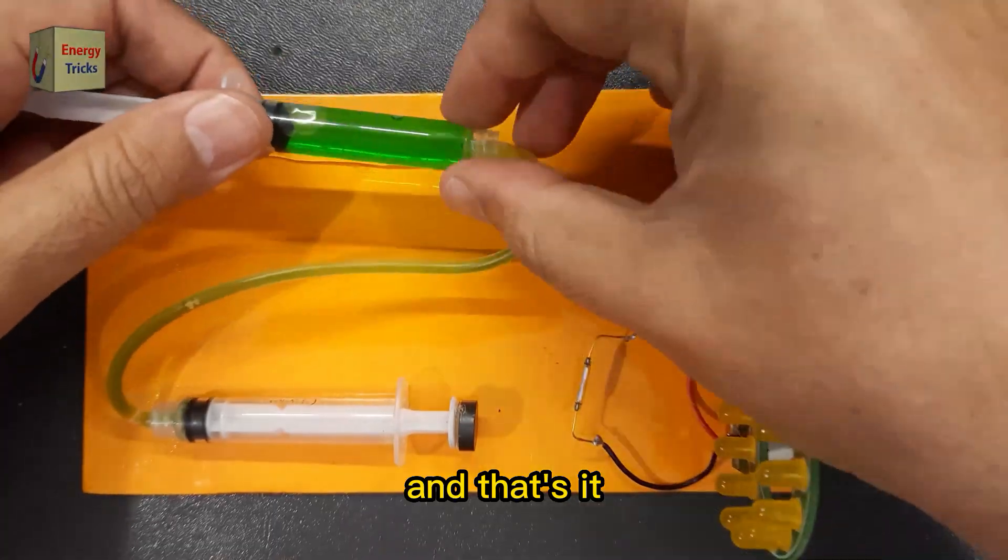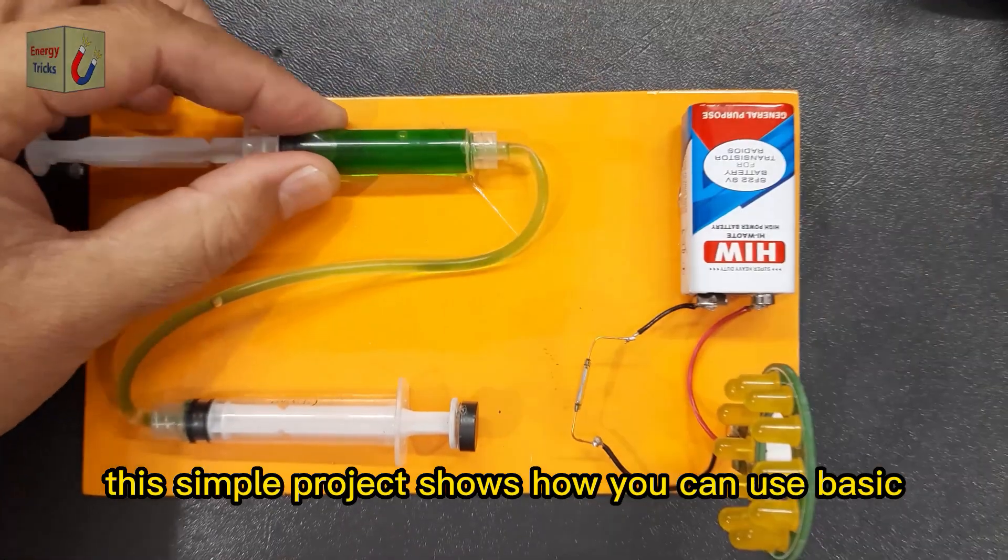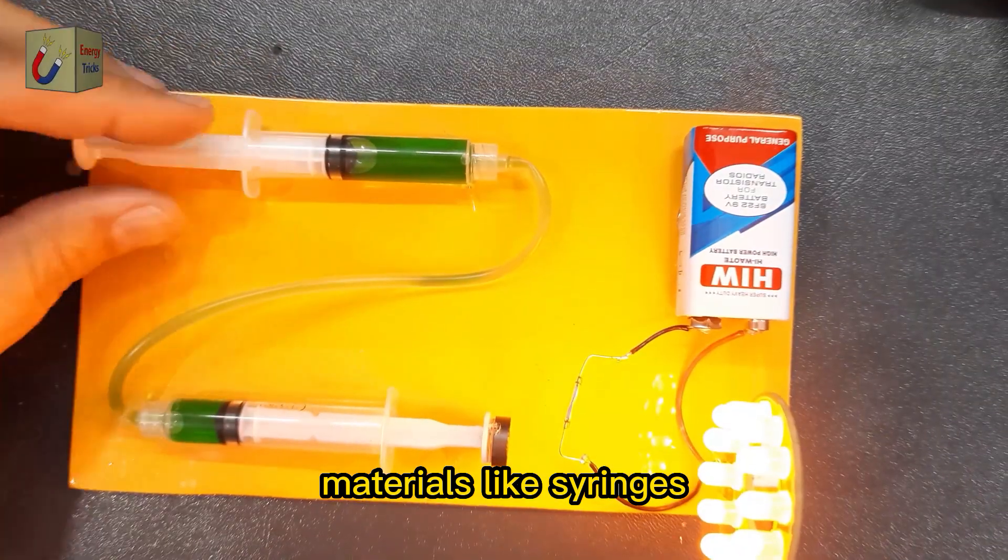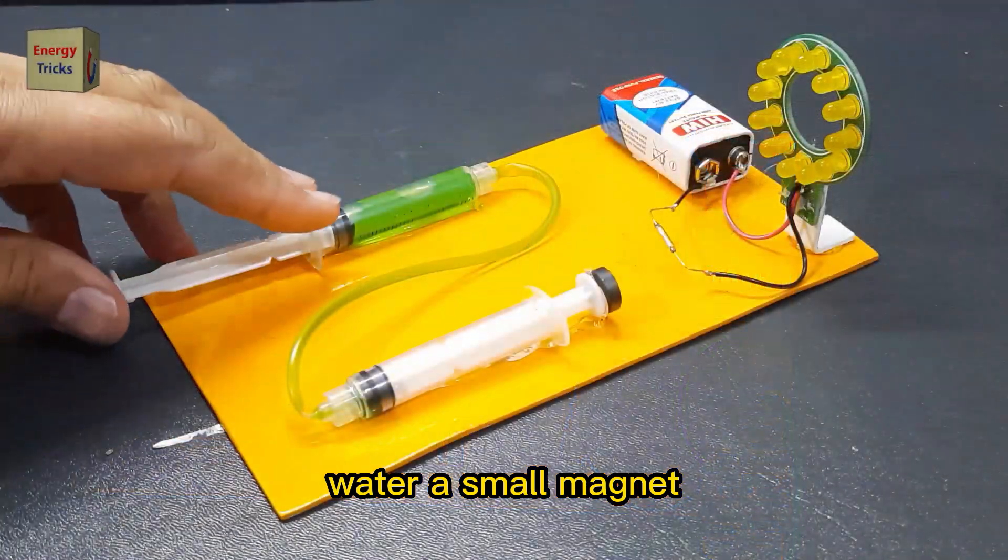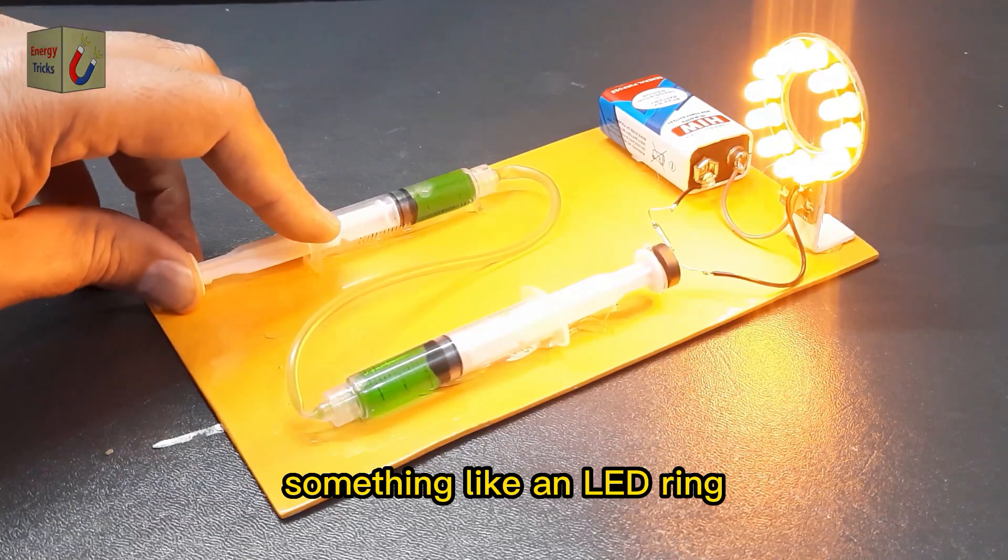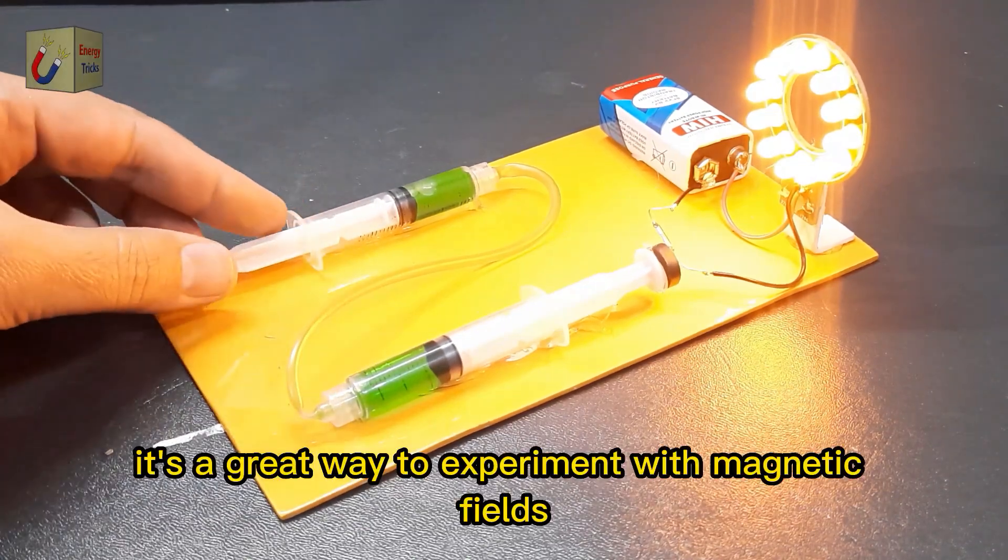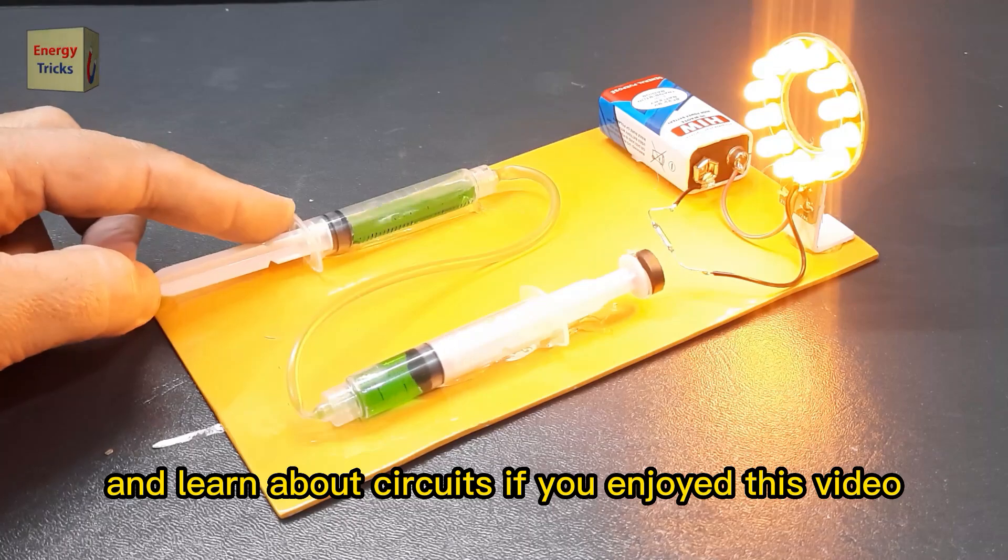And that's it! This simple project shows how you can use basic materials like syringes, water, a small magnet, and a reed switch to control something like an LED ring. It's a great way to experiment with magnetic fields and learn about circuits.